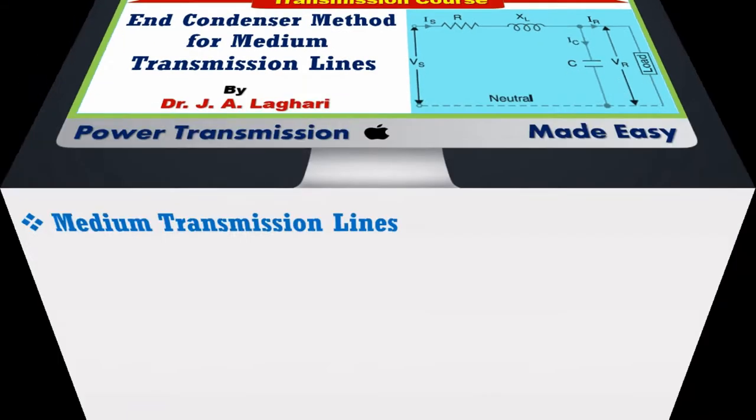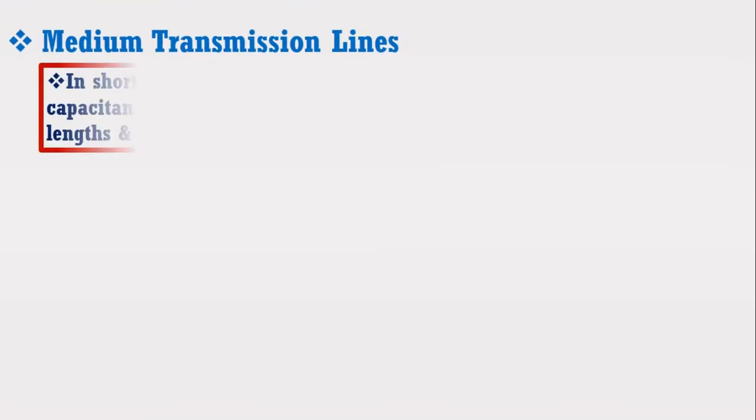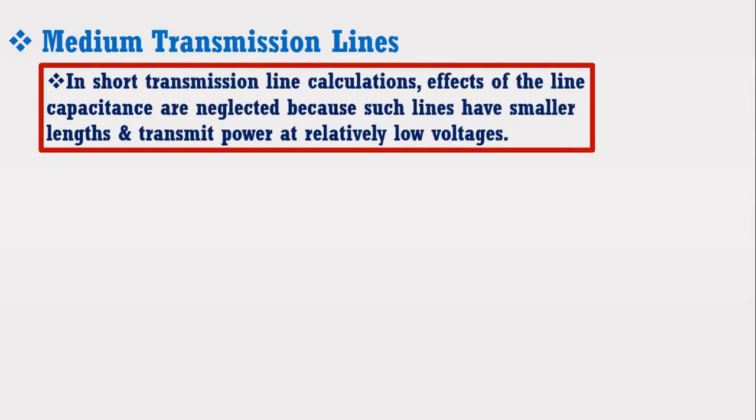In the previous lectures, we have discussed that in short transmission line calculations, effects of the line capacitance are neglected because such lines have smaller length and transmit power at relatively low voltages.